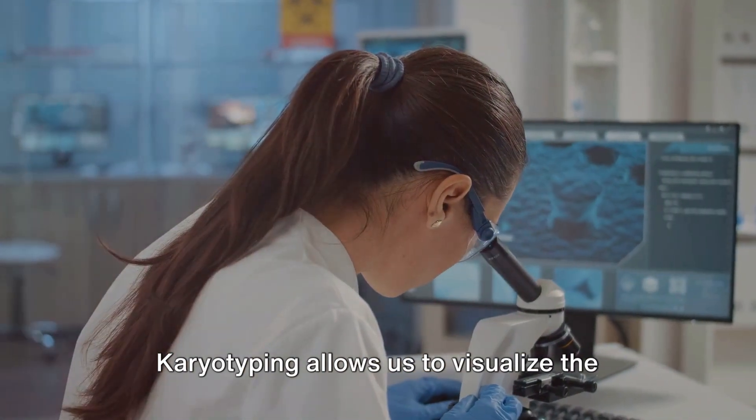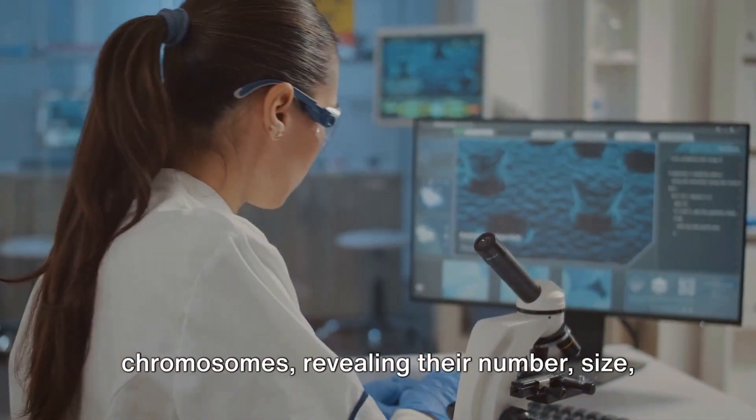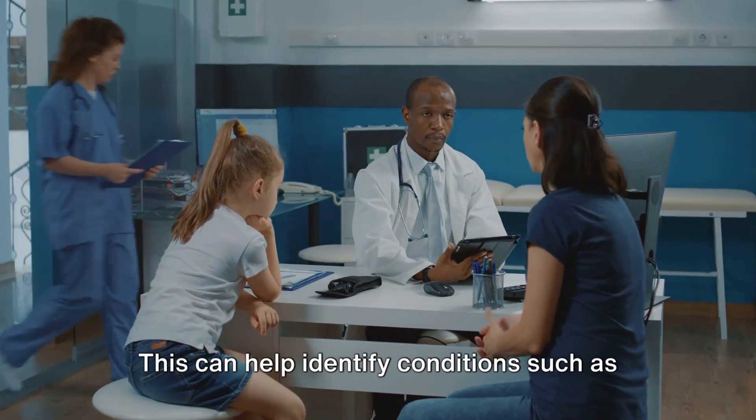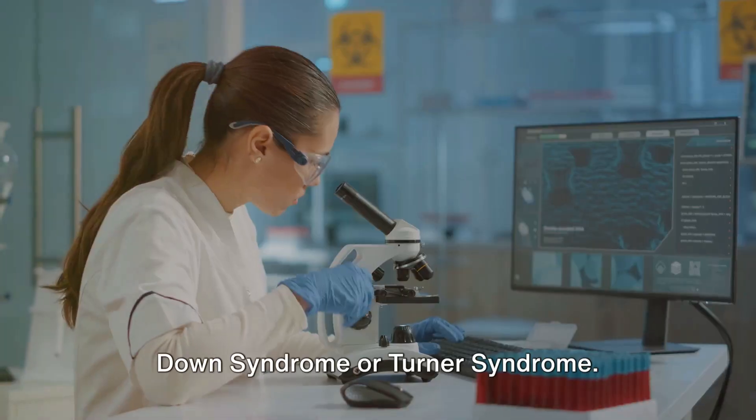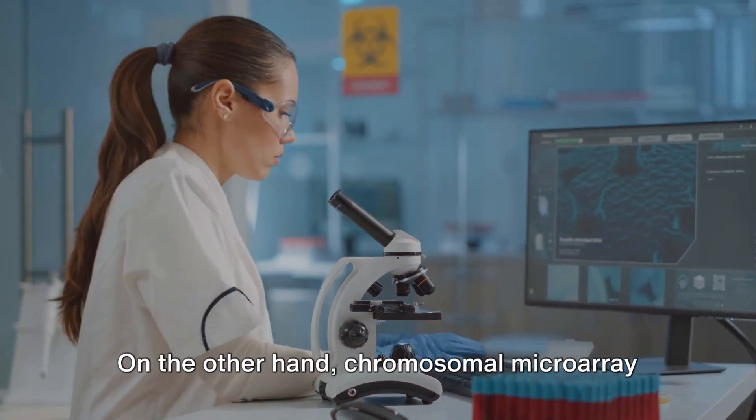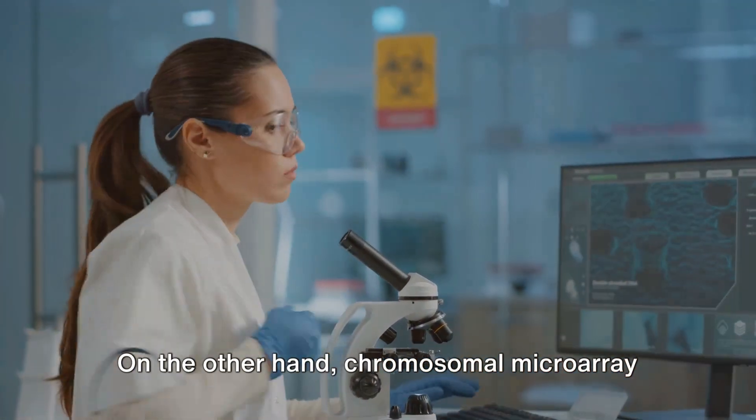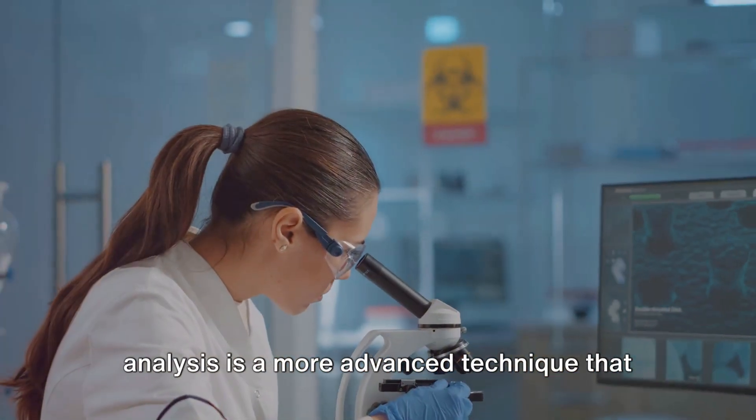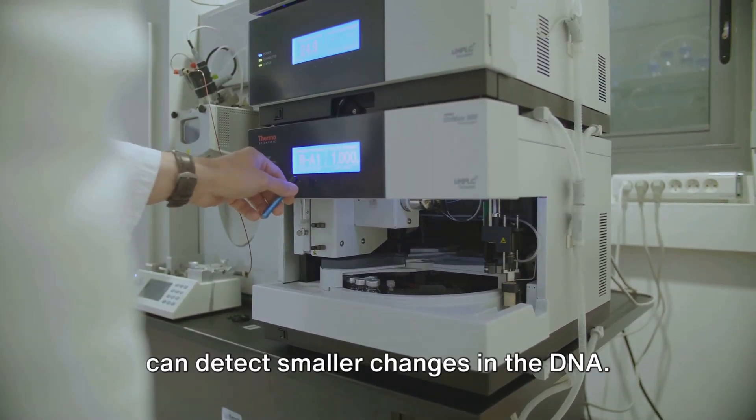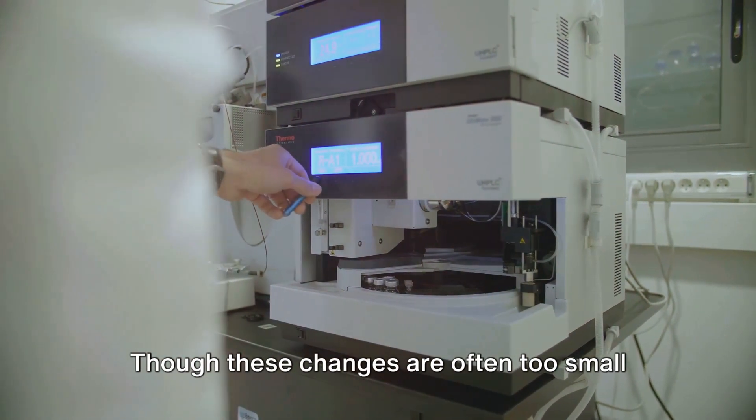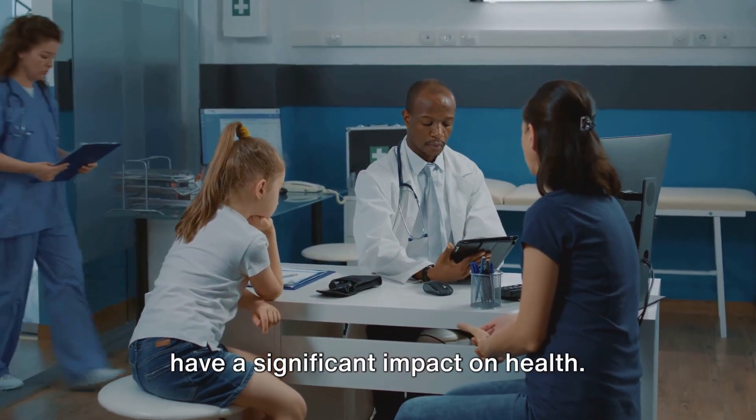Karyotyping allows us to visualize the chromosomes, revealing their number, size, and shape. This can help identify conditions such as Down syndrome or Turner syndrome. On the other hand, chromosomal microarray analysis is a more advanced technique that can detect smaller changes in the DNA. Though these changes are often too small to see under a microscope, they can still have a significant impact on health.